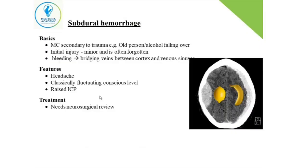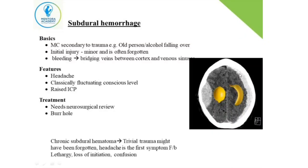There is increased intracranial pressure, causing headache along with vomiting and systolic hypertension. The patient requires neurosurgical review and surgery. The investigation is CT brain. In extradural hemorrhage, the arterial bleed is between the cranium and the dura, which is attached at the sutures — giving a lemon-shaped bleed. In subdural hemorrhage it's a venous bleed beneath the dura, giving a crescent-shaped bleed. Subdural hemorrhage is much more common in alcoholics and the elderly compared to extradural hemorrhage.